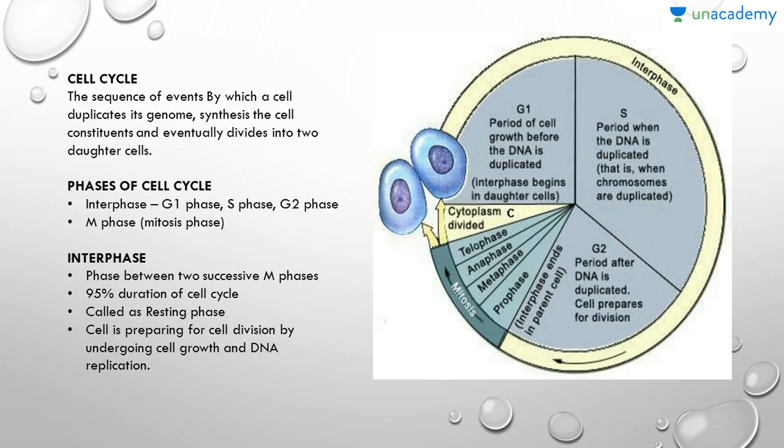We know that growth and reproduction are characteristics of cells. To continue generations we need to reproduce, and that's what the cell cycle is all about. The cell cycle is the sequence of events by which a cell duplicates its genome, synthesizes the cell constituents, and eventually divides into two daughter cells. At the end of this cell cycle we get the next generation — the two progeny.